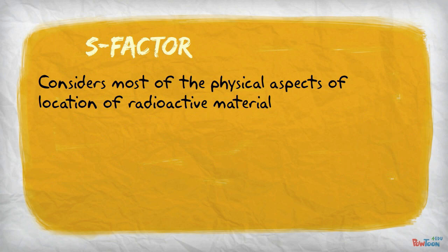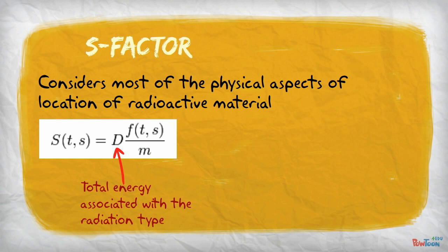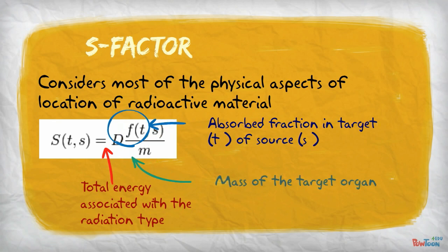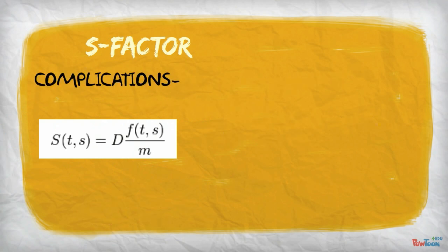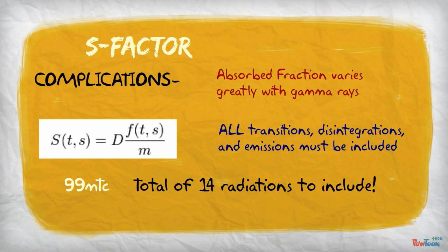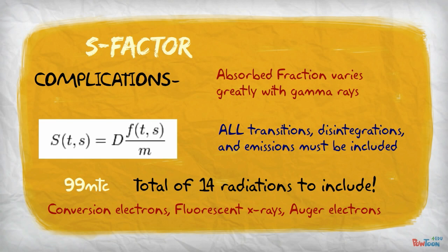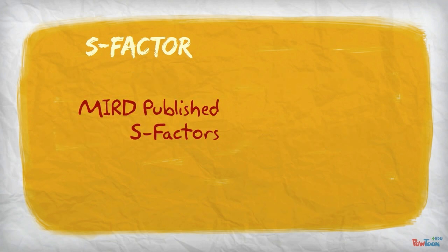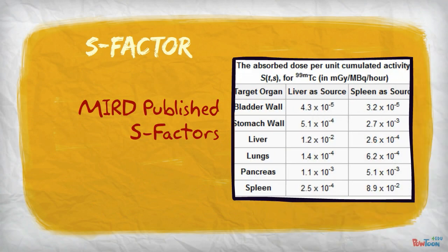The second factor is called the S-factor. It considers most of the physical aspects of the location of the radioactive material. Here is the equation for S-factor. Notice it accounts for total energy of each radiation type, absorbed fraction, and the mass of the target organ. Here are just some of the complications associated with calculating the S-factor. First, the absorbed fraction varies greatly with gamma rays, depending mostly on their energy. Also, all transitions, disintegrations, and emissions must be included, not just the primary decay. For technetium-99m, there are a total of 14 radiations that are included in its S-factor. These include conversion electrons, fluorescent X-rays, and Auger electrons. Lucky for us, the MIRD published S-factor, so we don't have to perform all these measurements and calculations. Here is an example of S-factor for technetium-99m.